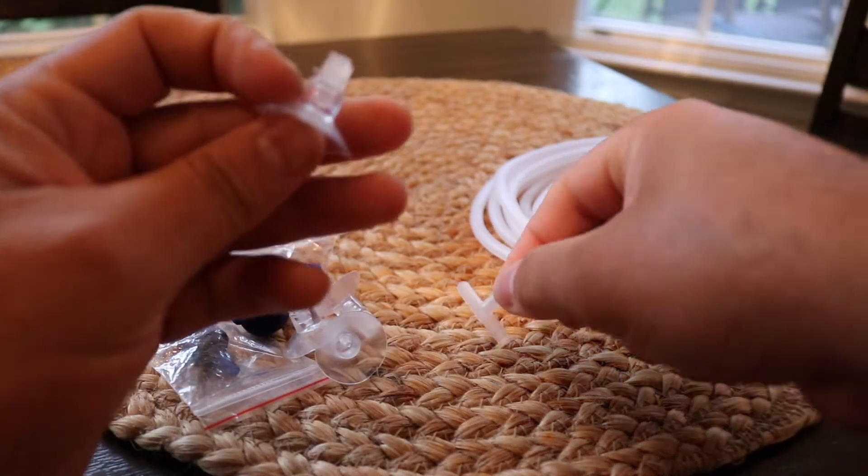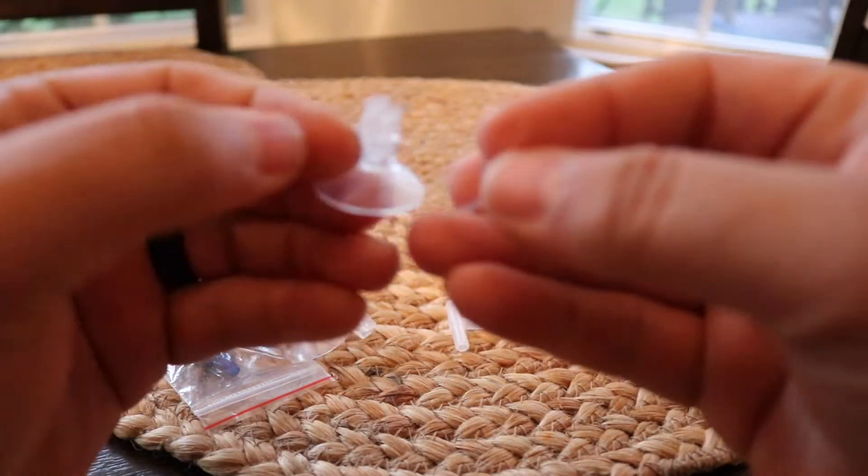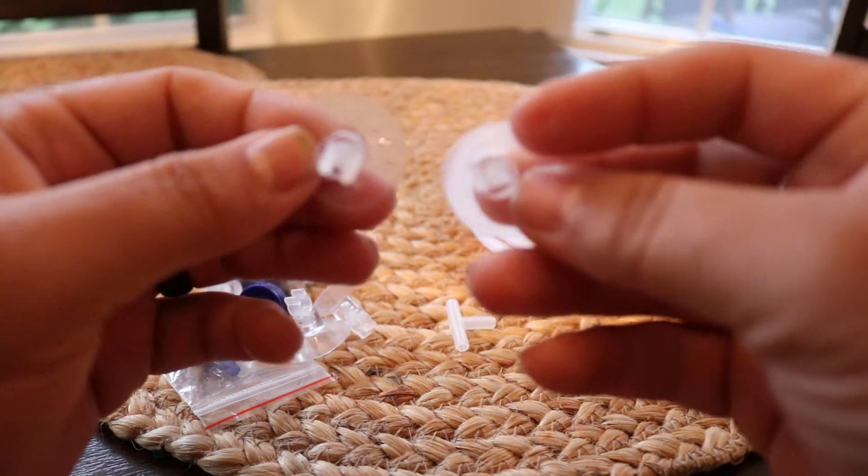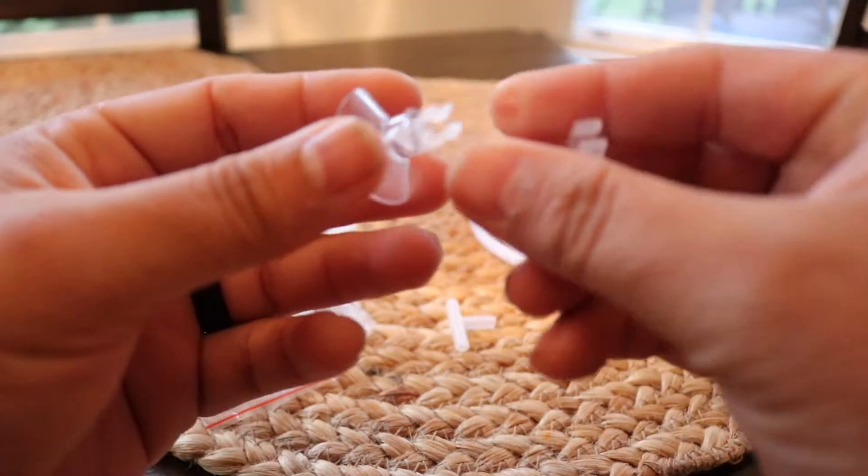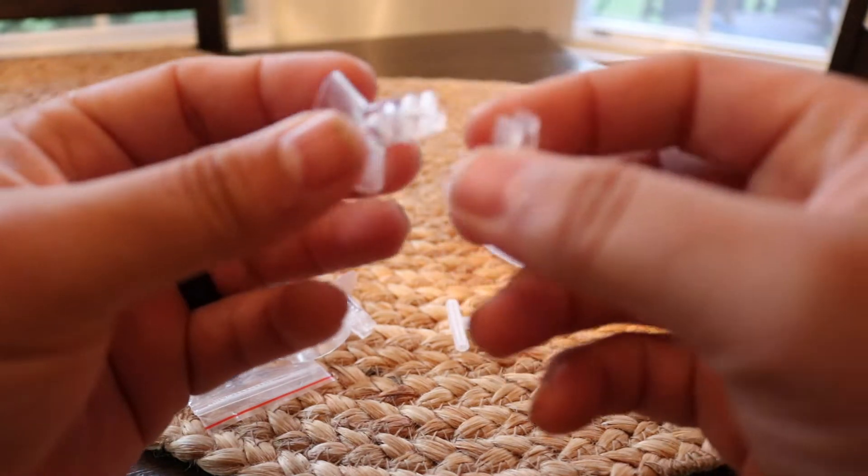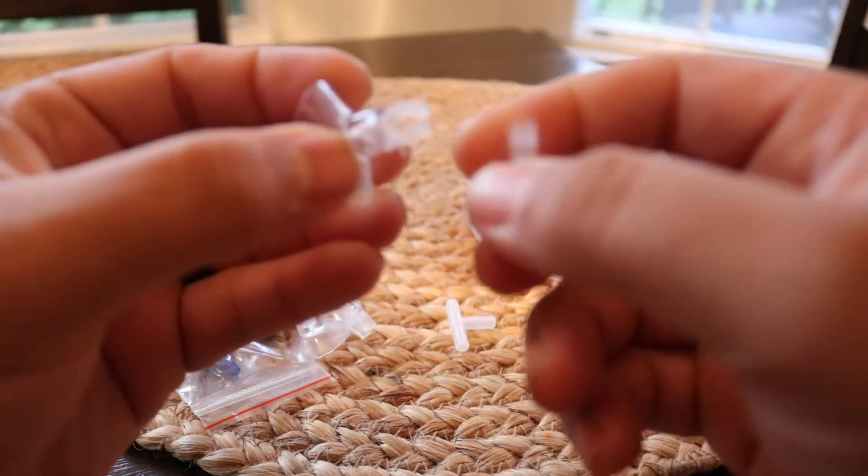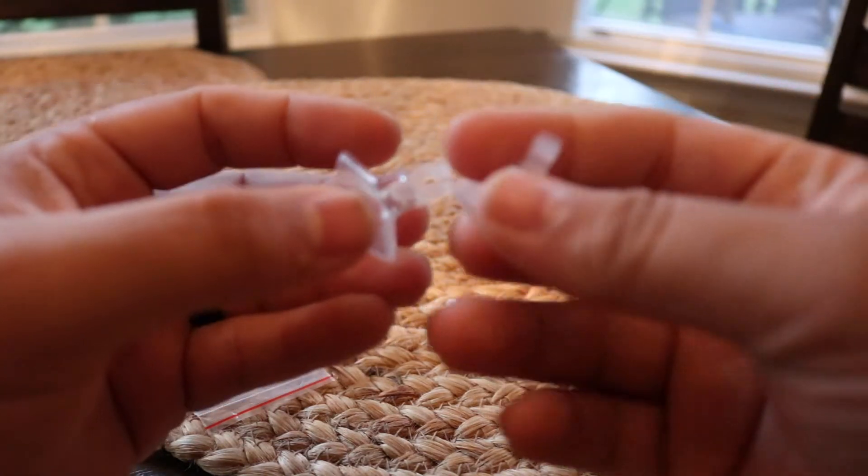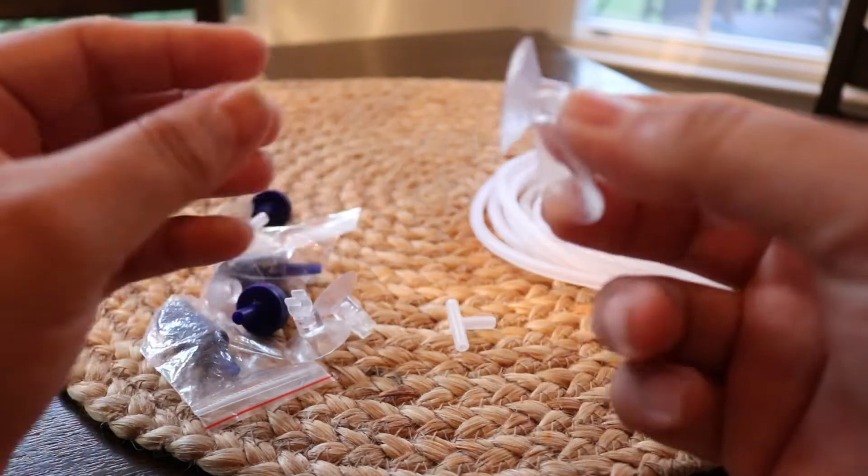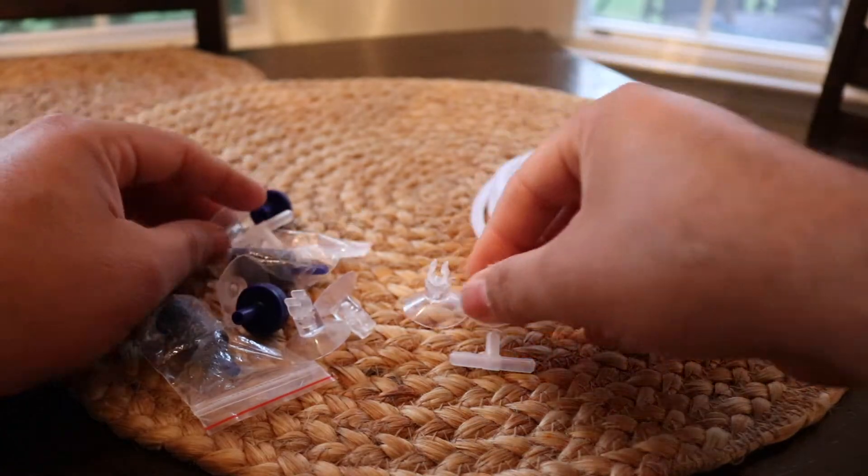You got some of these suction cups right here that are beneficial as well. You put this against the glass and you have the ability to route the line. You can position the line to whatever location you want. You got a few of those - I see about six of them right here.